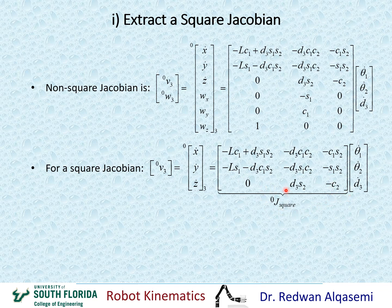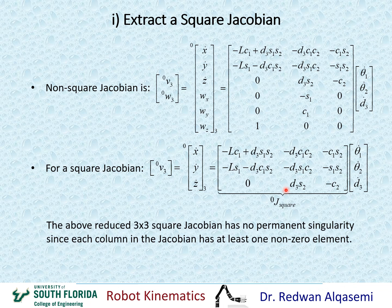This square Jacobian can be inverted. As you can see, it has no permanent singularity because none of these columns have all-zero elements. If any column had all-zero elements, that would indicate a permanent singularity. Since that's not the case here, we know our Jacobian has no permanent singularity.